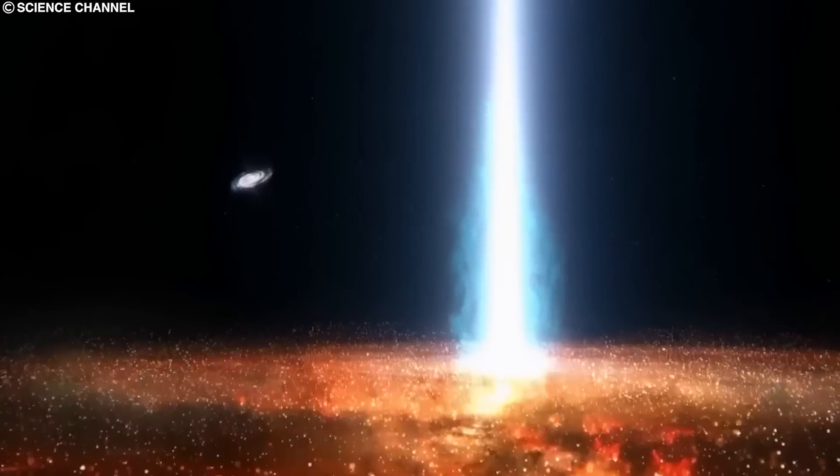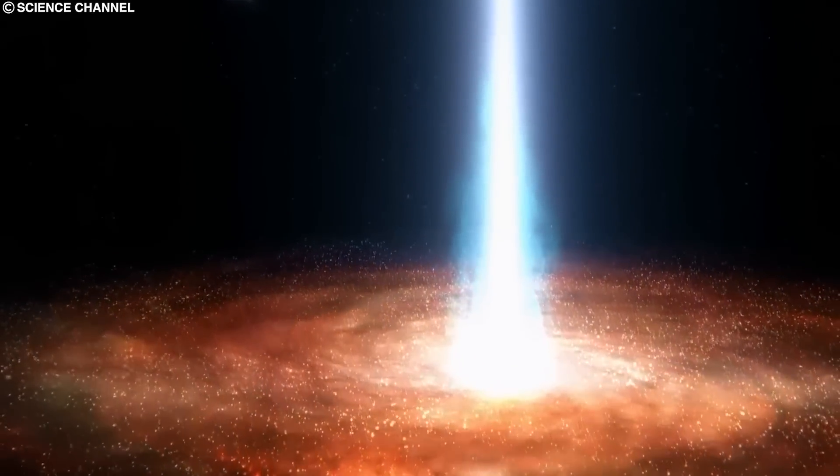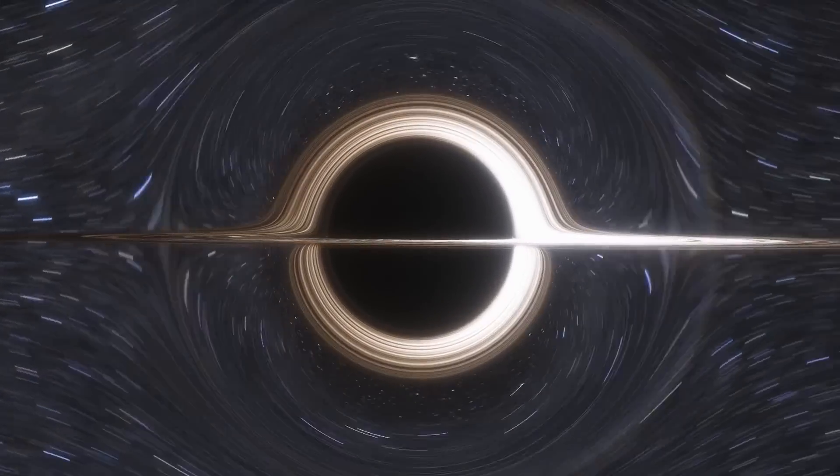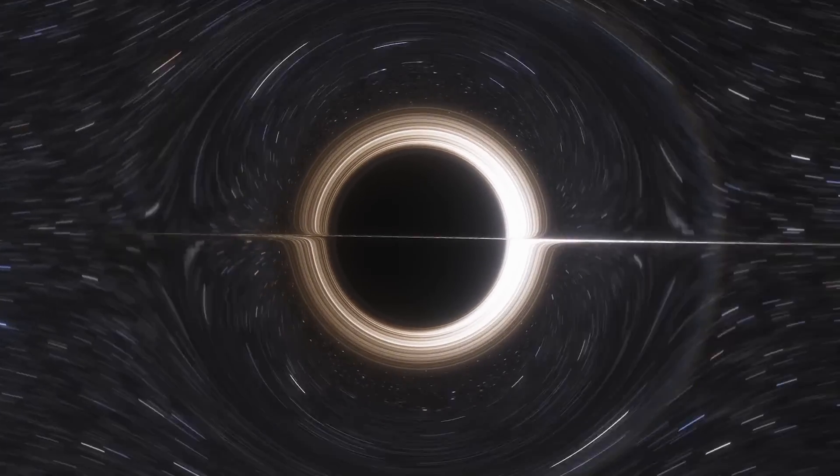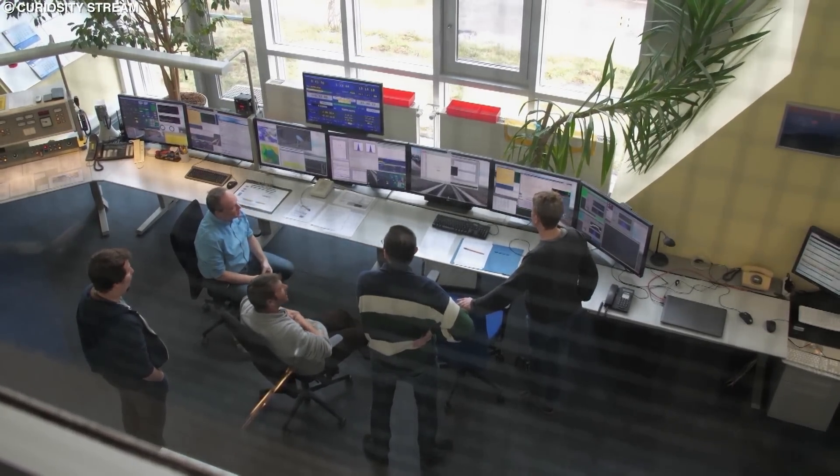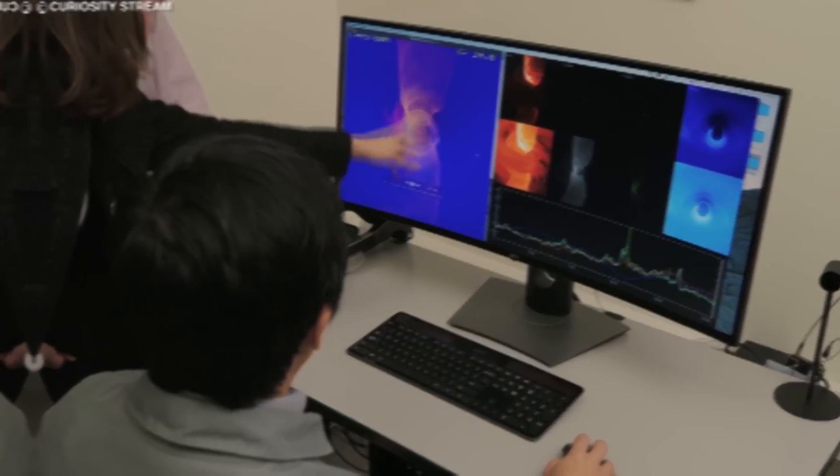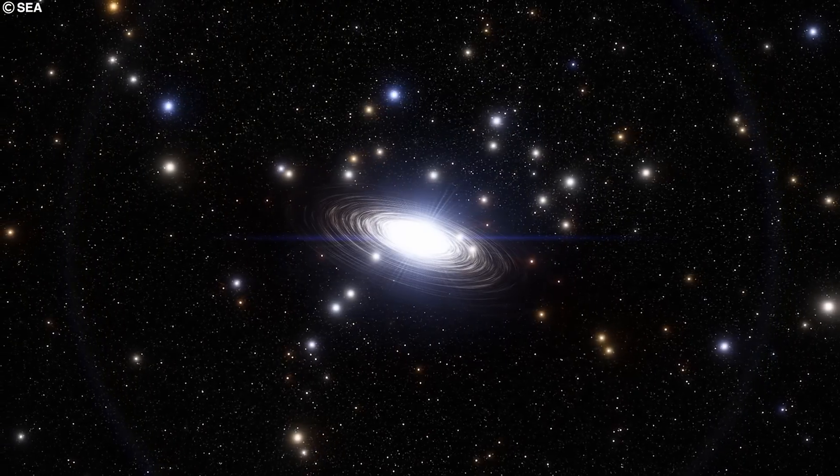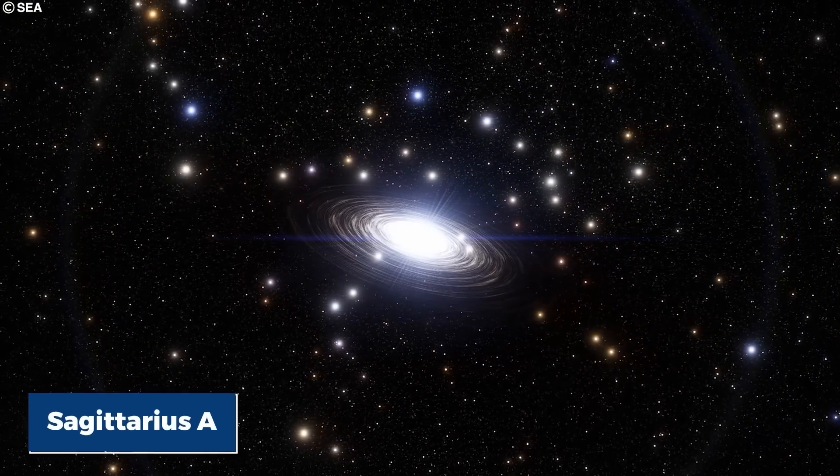But thankfully, light can still persist and form patterns around these gravitational giants, forming something of a photonegative, indicating the presence of these massive cosmic giants. An international team of researchers and astronomers set out to capture the very first image of a black hole, targeting the supermassive black hole that sits at the center of our Milky Way galaxy, Sagittarius A.